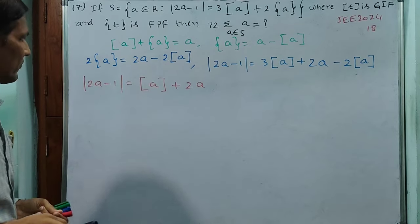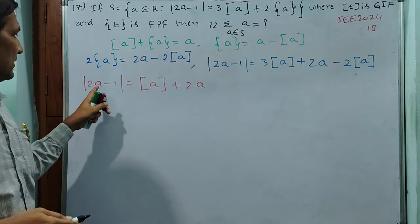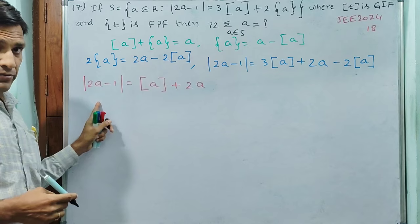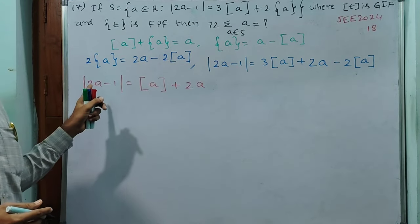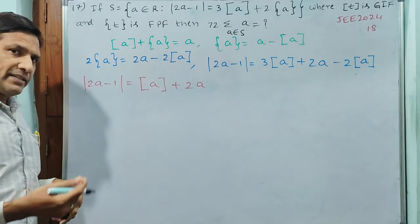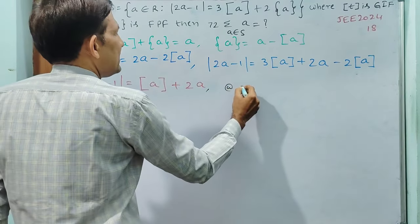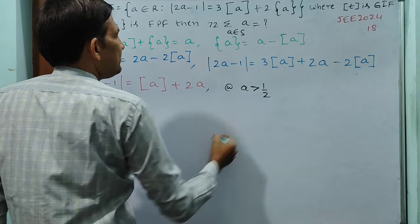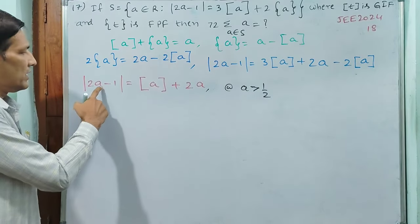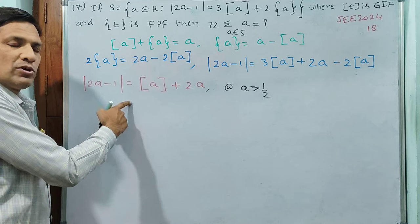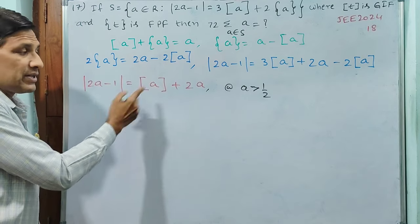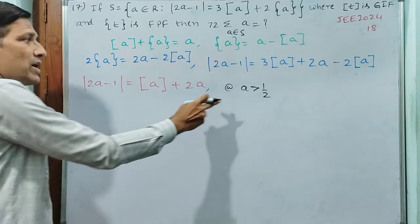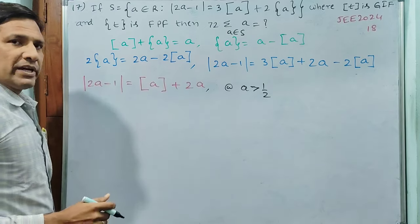Now we determine what values a can take. The modulus expression 2a minus 1 equals zero when a equals 1/2. Since this is a modulus, we must consider two cases: a greater than 1/2 and a less than 1/2. I am taking the first case: a is greater than 1/2.